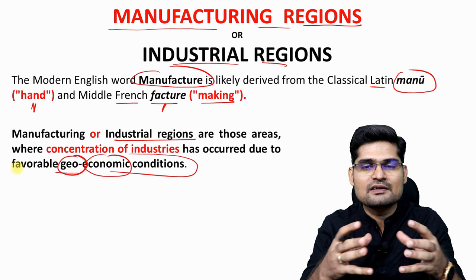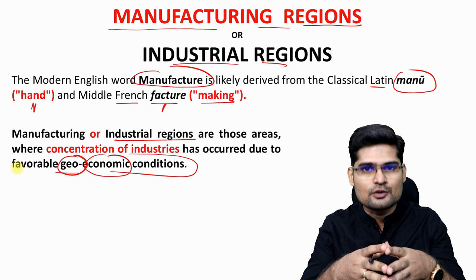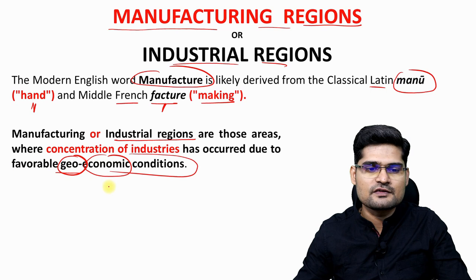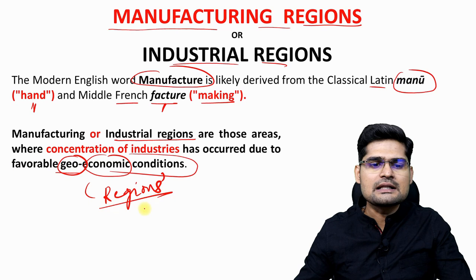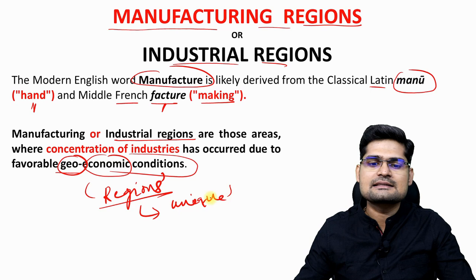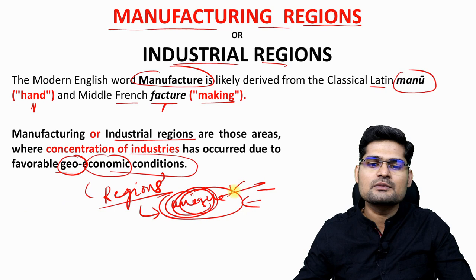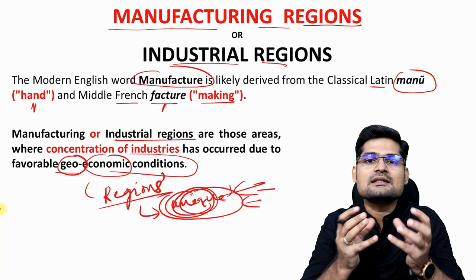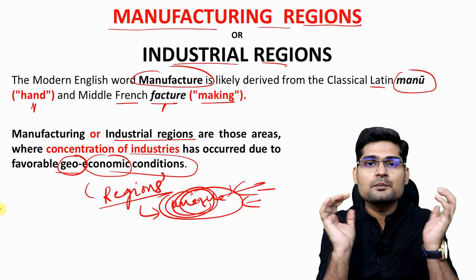The word 'region' — which we'll study in detail in lectures on regional planning and development — essentially means an area that is unique in its characteristics and different from the outside. Inside and outside perspective, plus uniqueness, is what makes a region. So a manufacturing region means that the concentration of industries there is different from its adjoining areas.